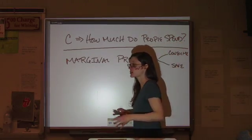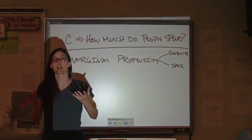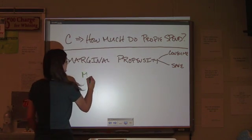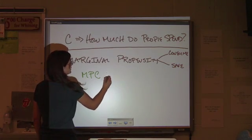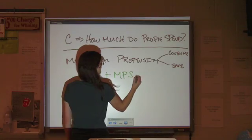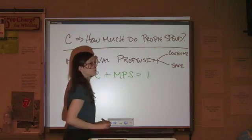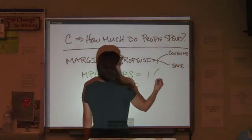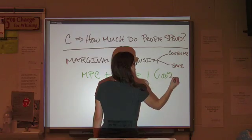Now, because you can only have 100% of the next dollar that you get, your marginal propensity to consume plus your marginal propensity to save cannot equal more than 100% of that dollar. Okay, one being 100%.